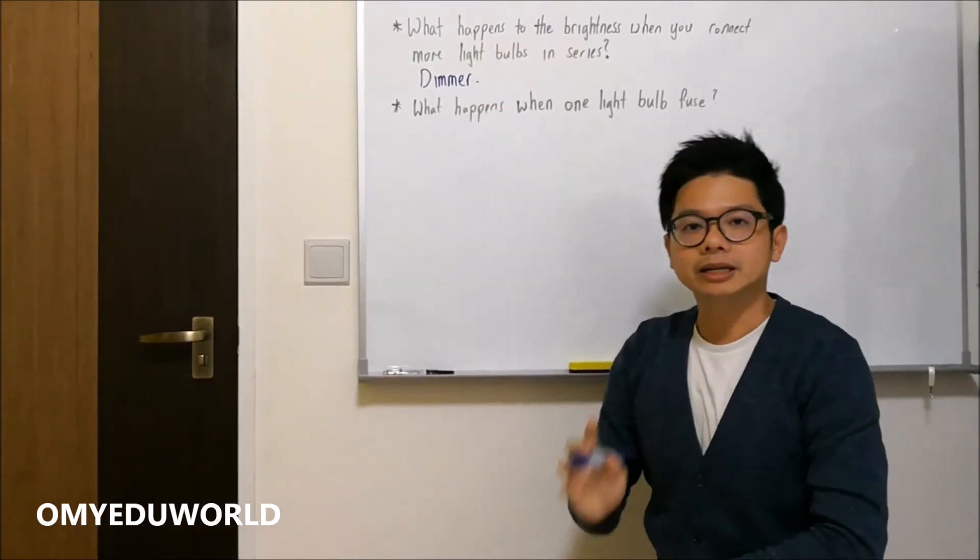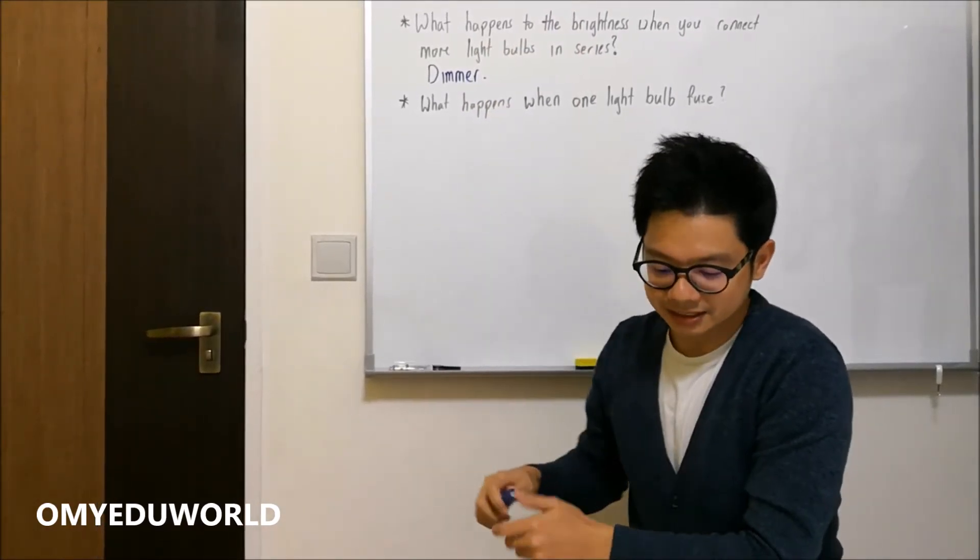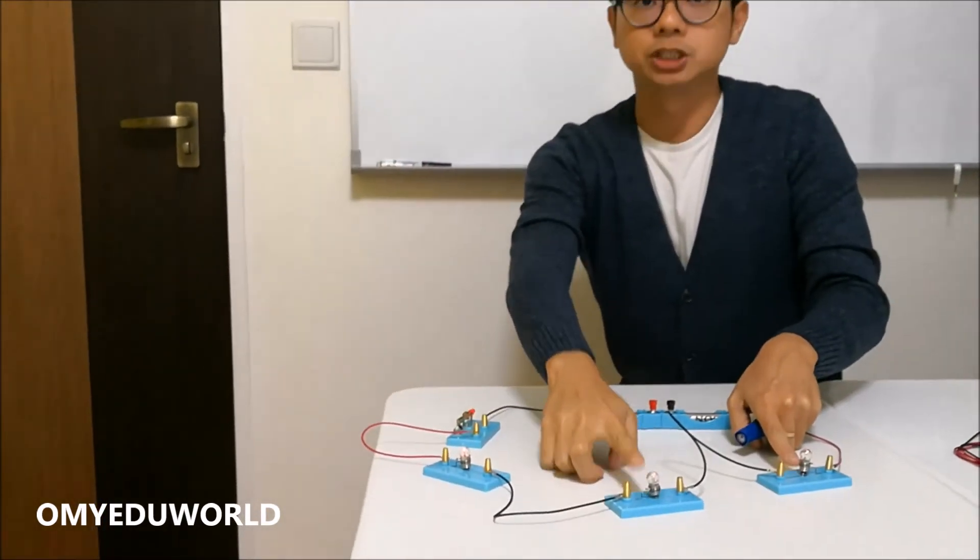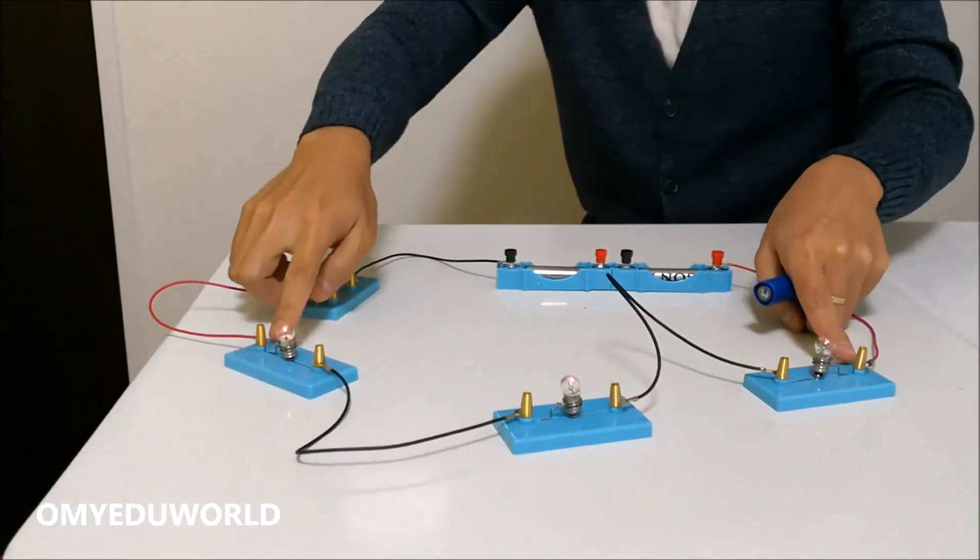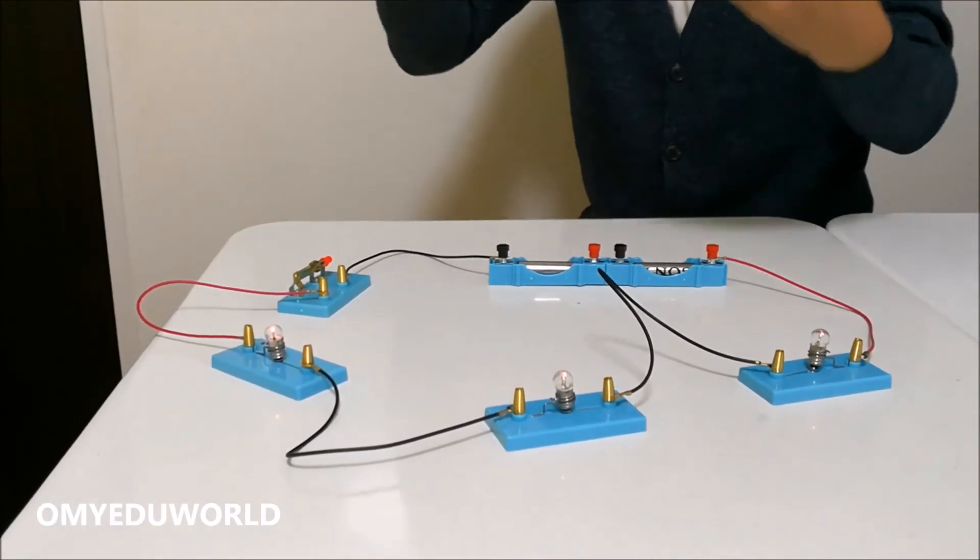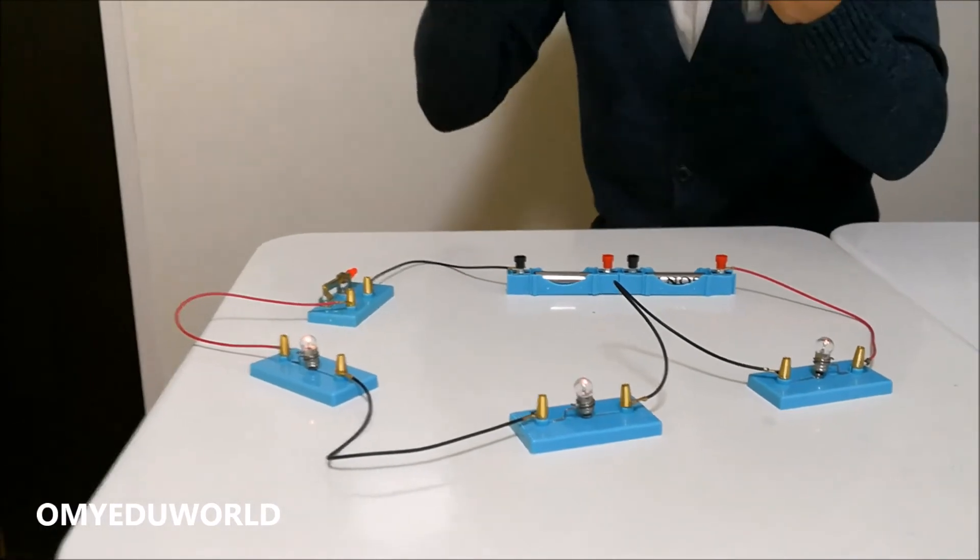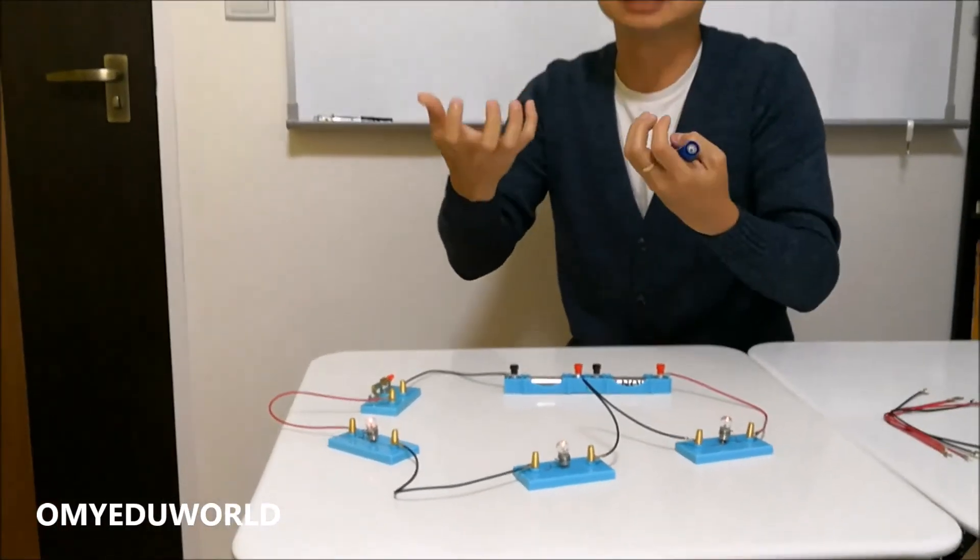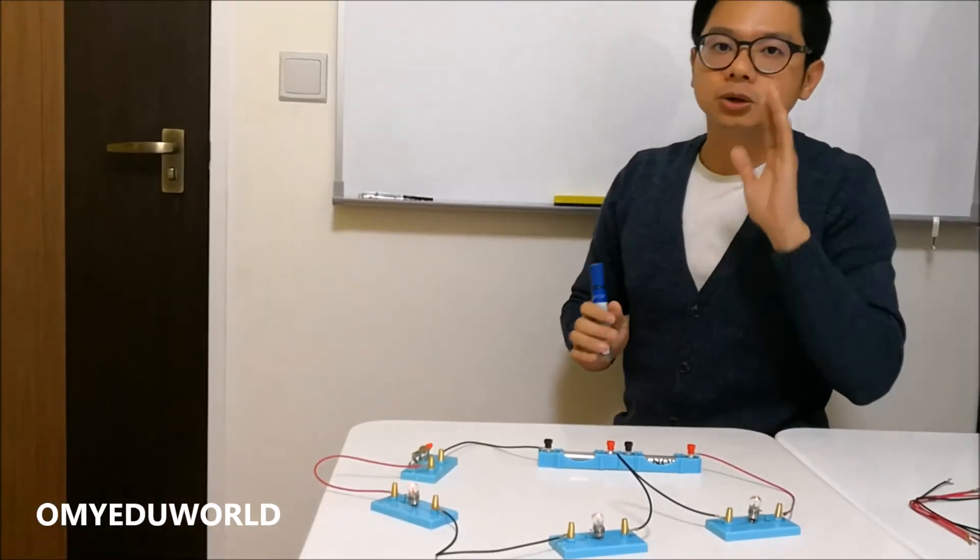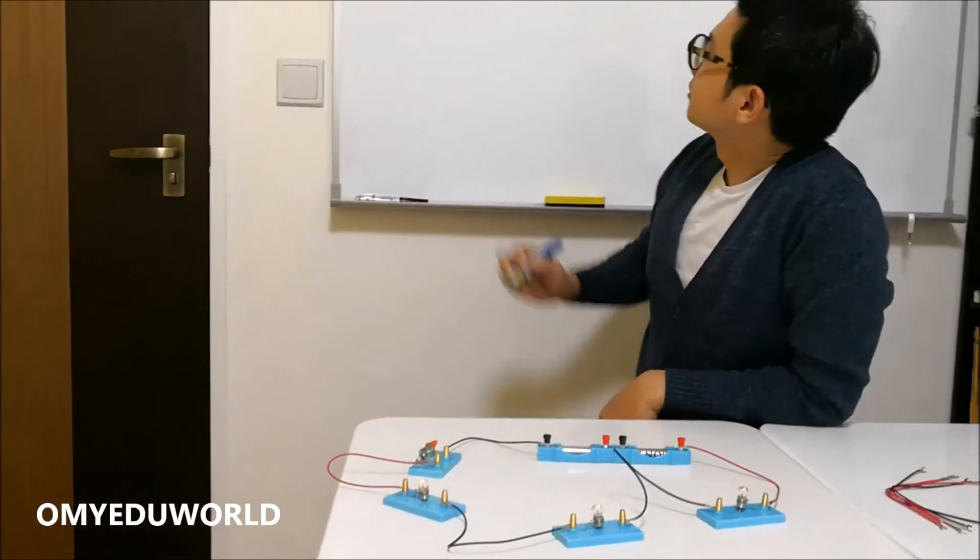And guess what? Why is it so? Just now, you can see that there are two light bulbs sharing two batteries. So now you have three light bulbs sharing the same thing, two batteries. So they get less energy for individual light bulbs. That's why the brightness is lower. So this part is clear. Now, let's look at the second question.